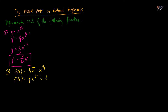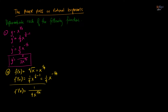Simplifying, we get one-fourth times x raised to one-fourth minus one, which is negative three-fourths. Since we don't want negative exponents in our final answer, f prime of x equals one over four x raised to three-fourths in the denominator. This is the derivative of the function.